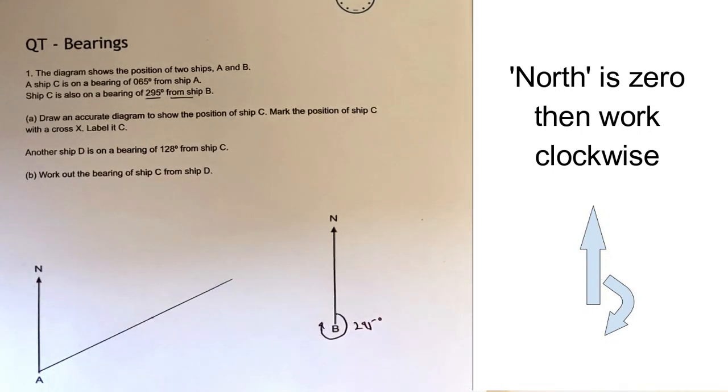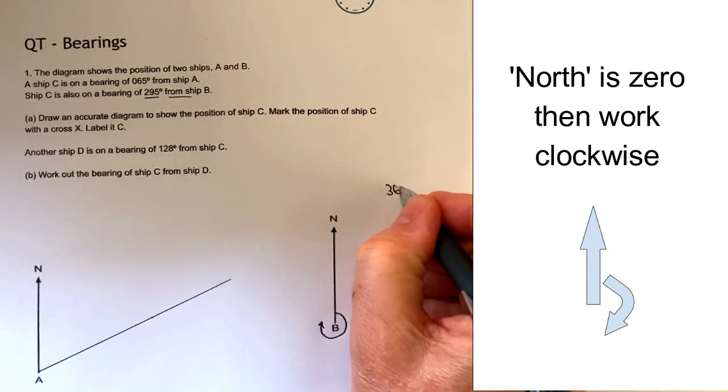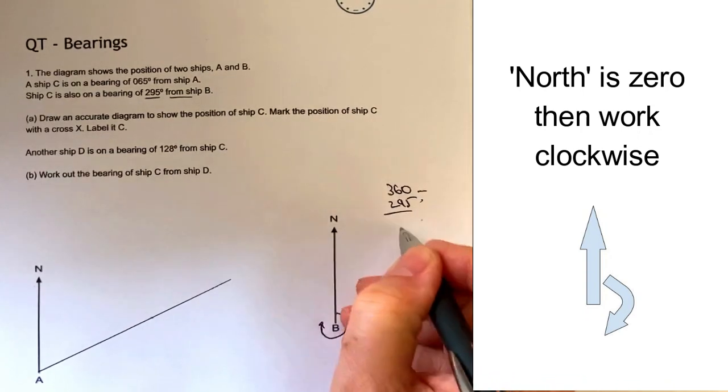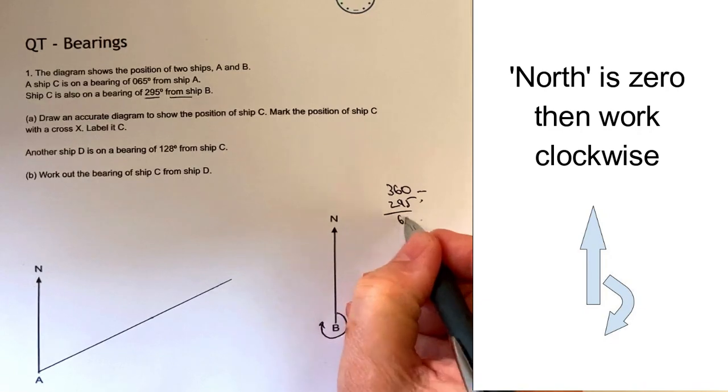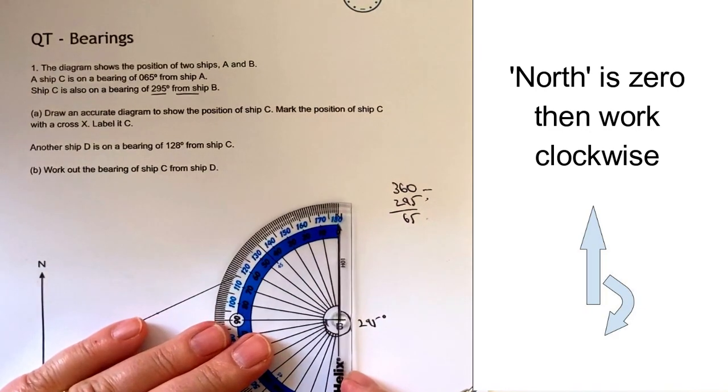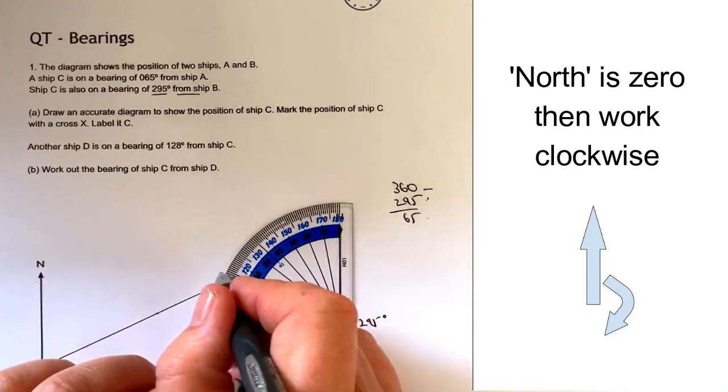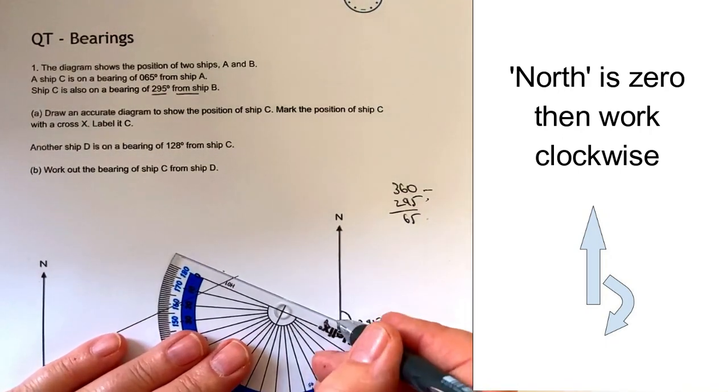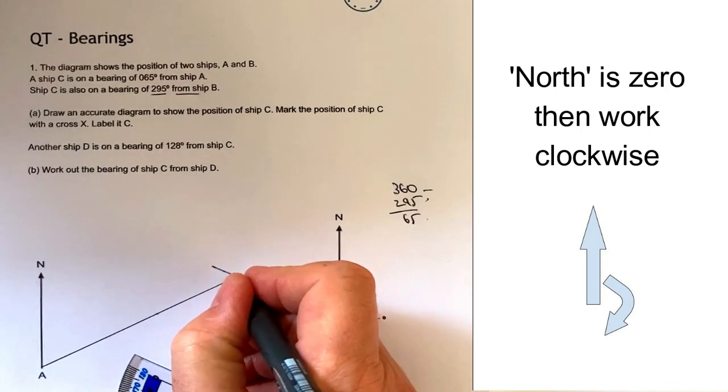Well, the easiest way to do that is to say, well actually I know there's 360 degrees in a circle, so 360 take away 295 is going to give me 65 degrees. So if I measure 65 degrees again from here, where those two lines cross is actually going to be the location of C.